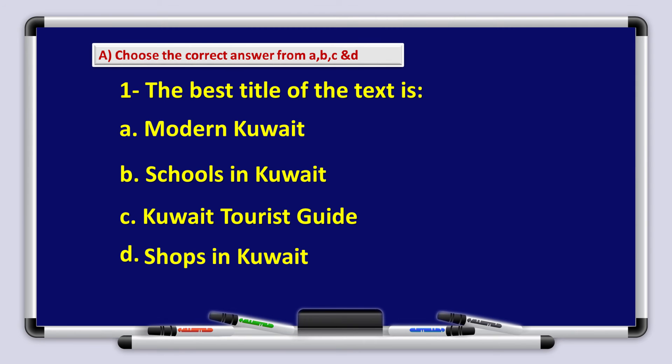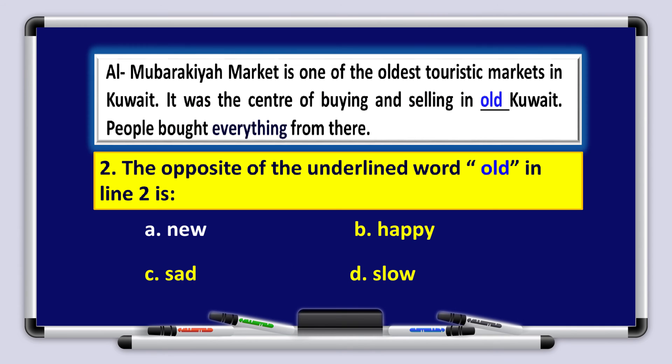Try to choose the correct answer from A, B, C and D. Number one. The best title of the text is: A, modern Kuwait. B, schools in Kuwait. C, Kuwait touristic guide. D, shops in Kuwait. Yes, that's the correct answer. Kuwait touristic guide is the best title of this text.